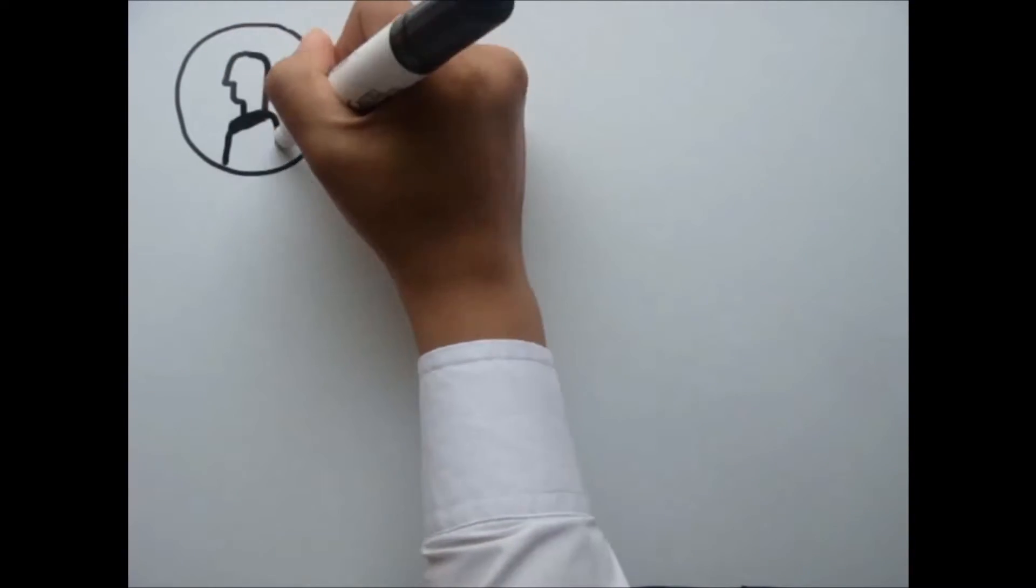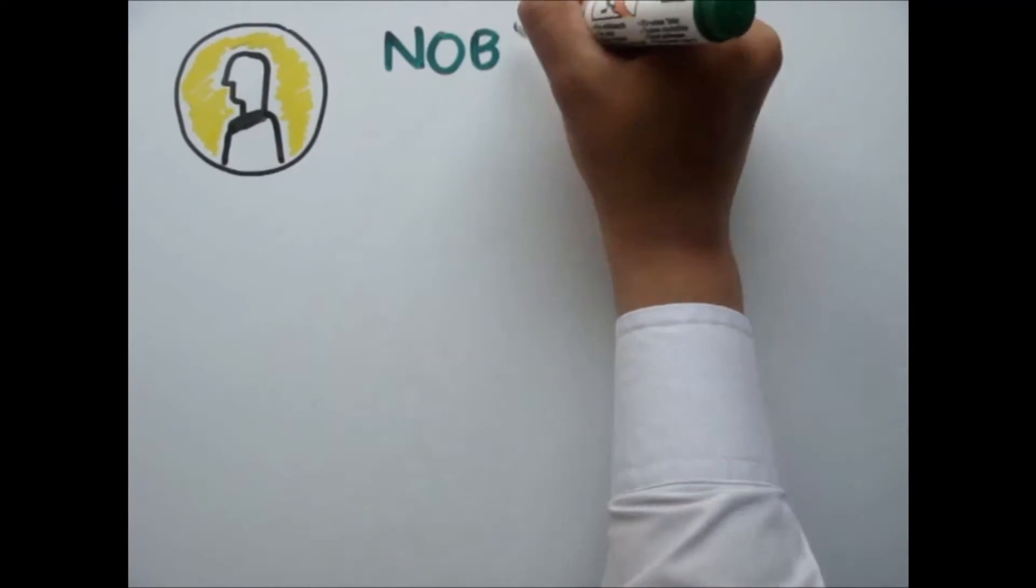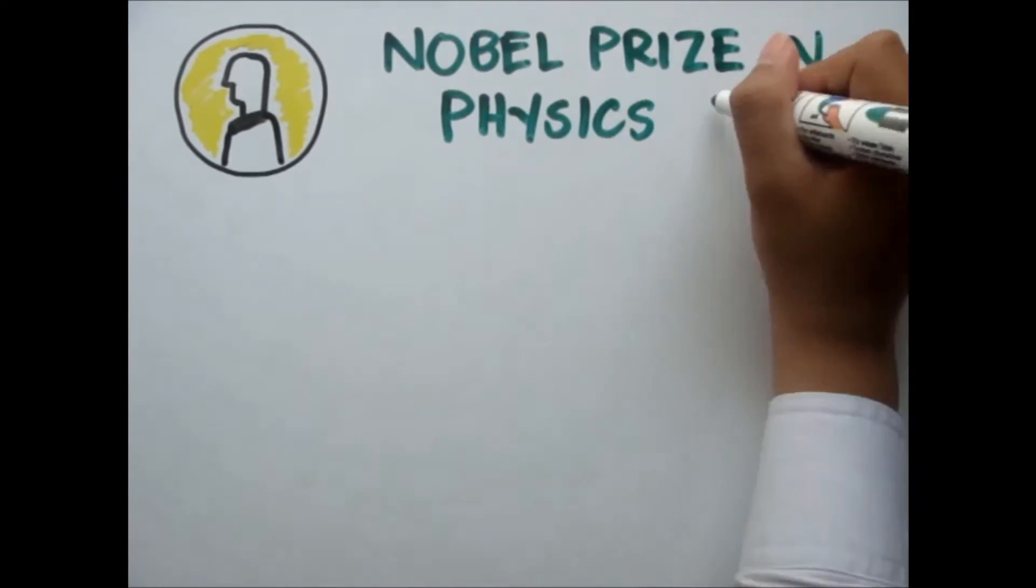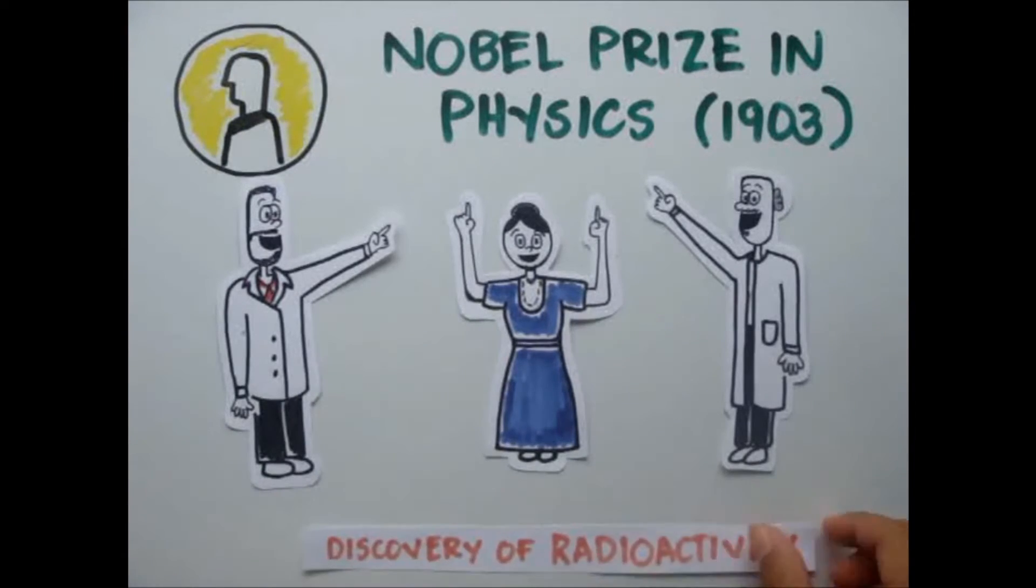In 1903, Marie along with Pierre and Becquerel won Nobel Prize in Physics for their discovery of radioactivity. She became the first woman to receive a Nobel Prize.